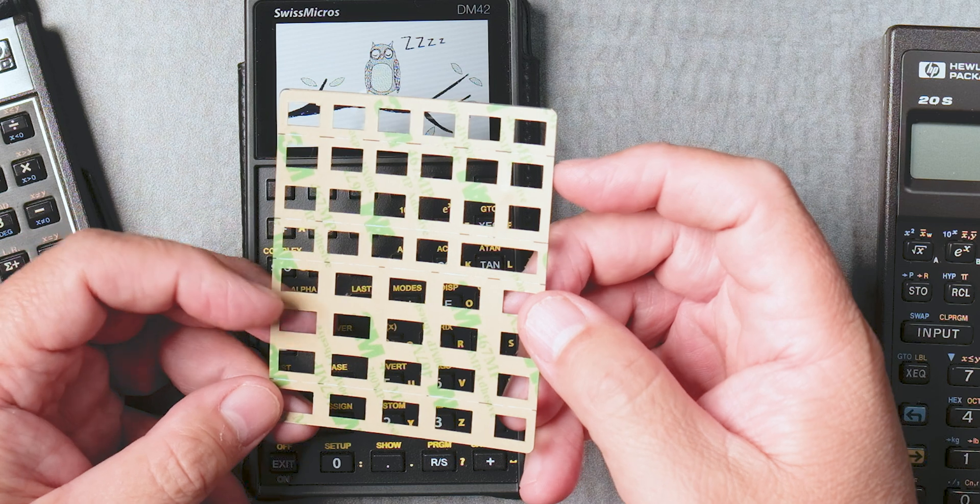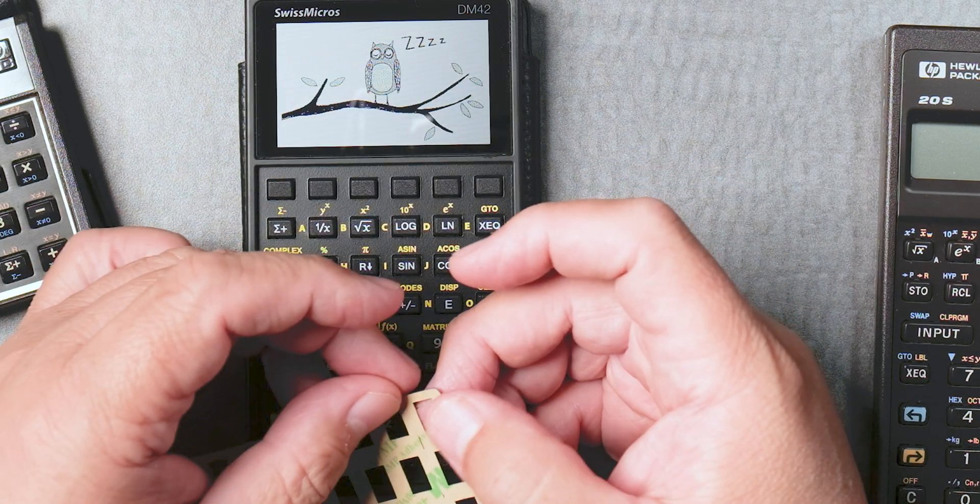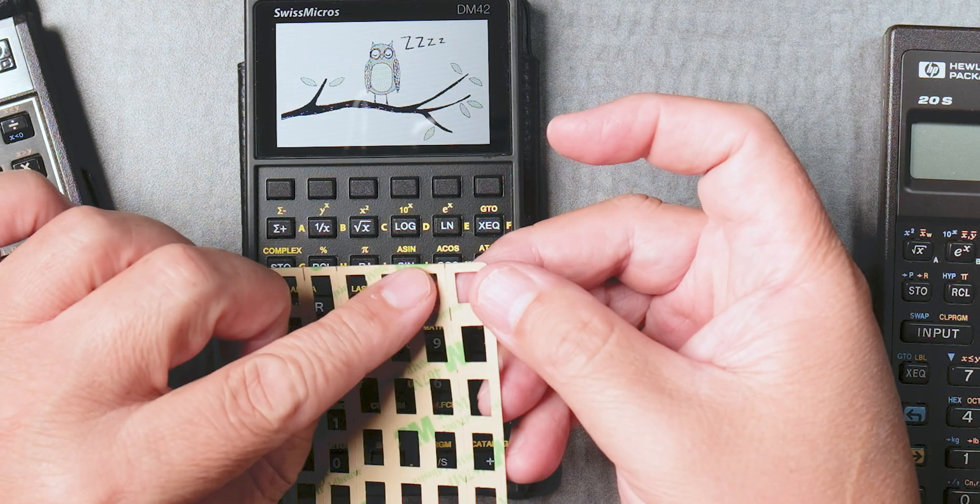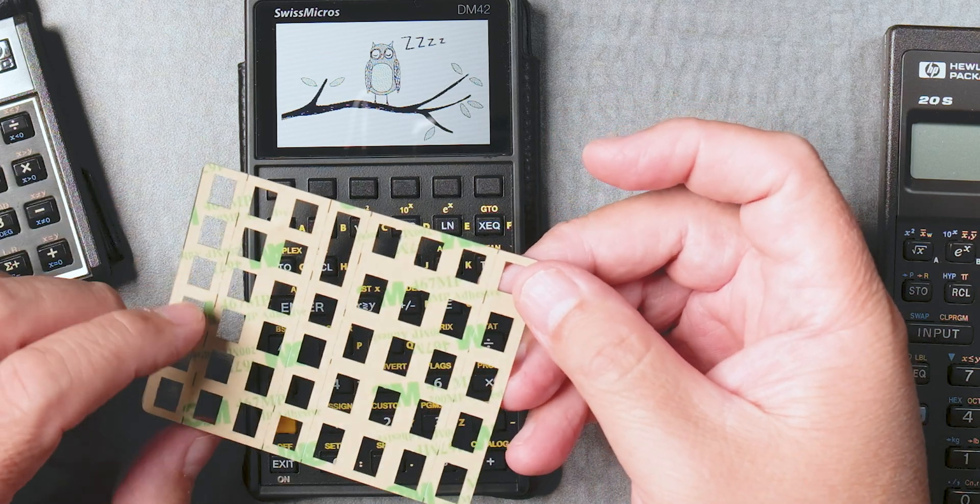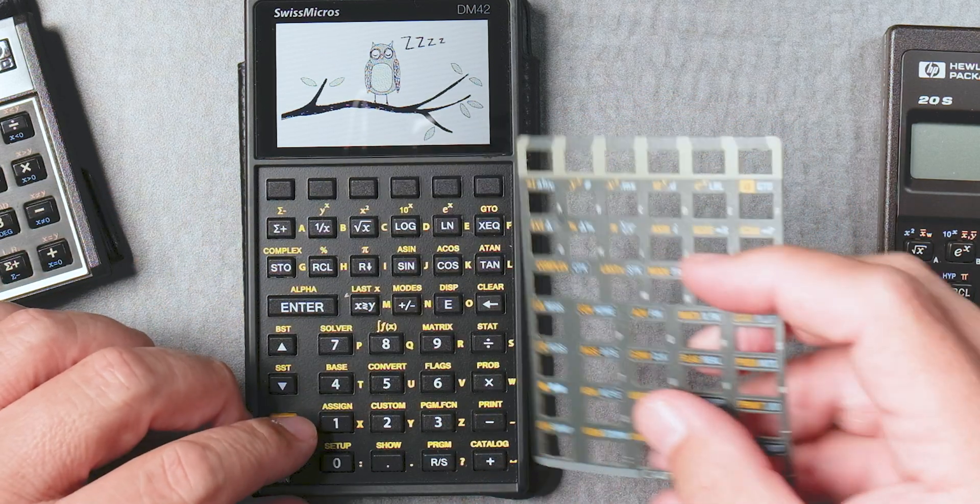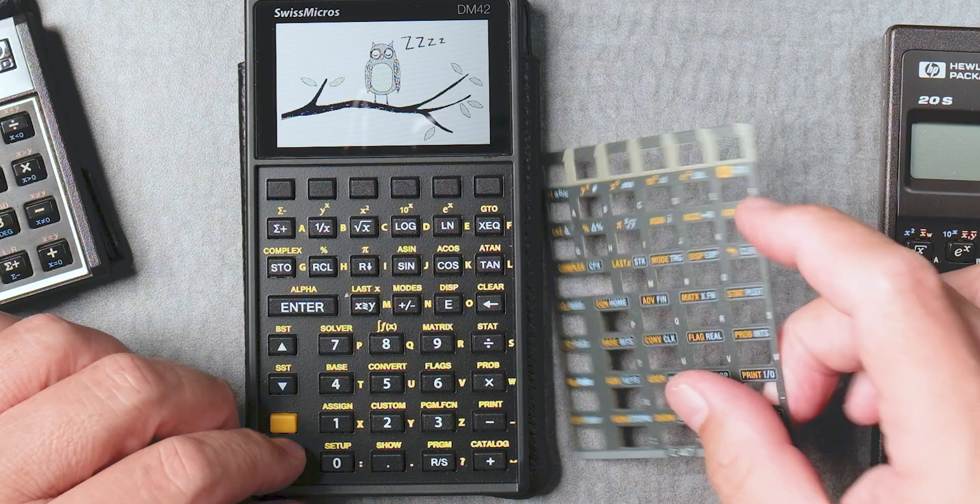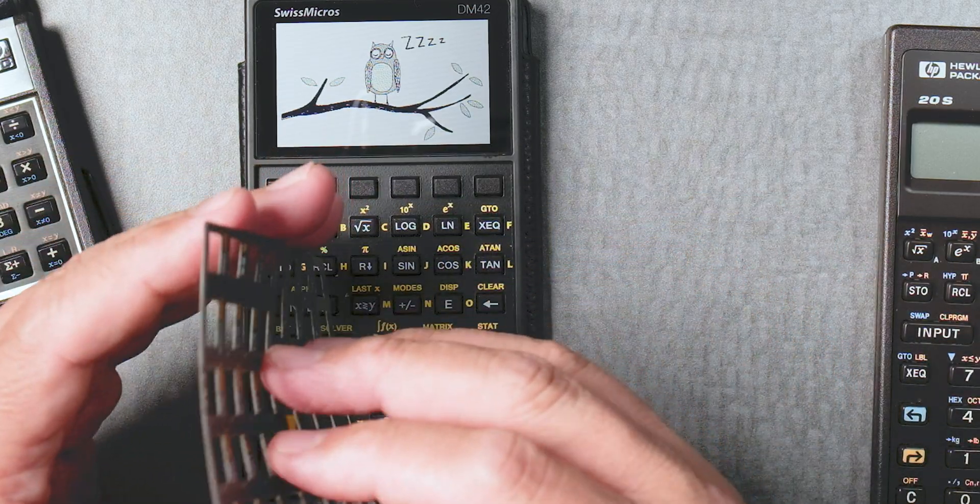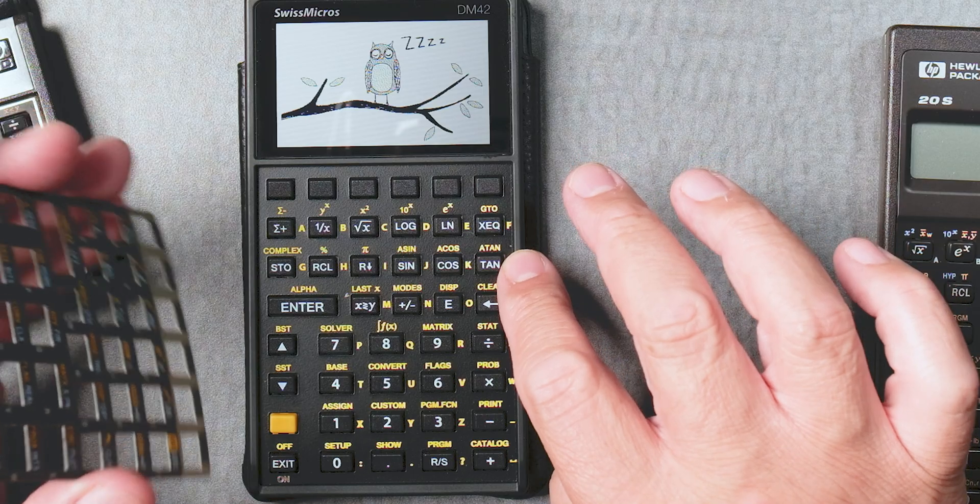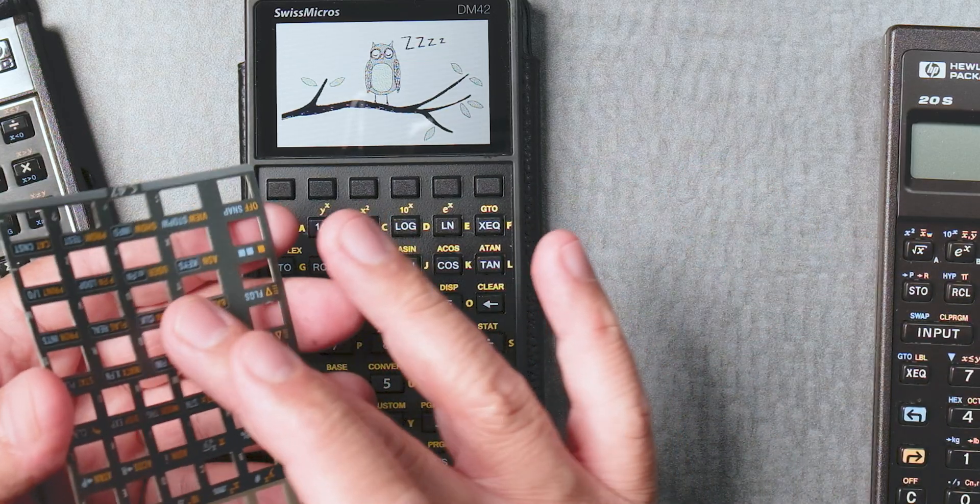As you've seen in other videos, it is perforated where you can definitely peel this off and then paste it on there. One thing, I haven't done it yet. I haven't made the DM42 permanent to a C47. I probably will.